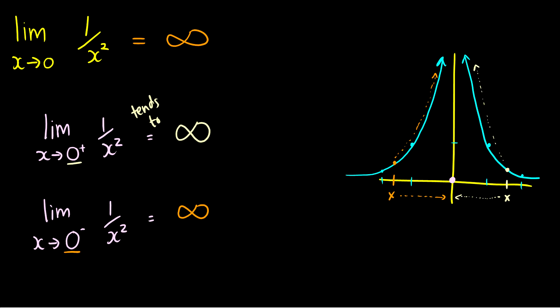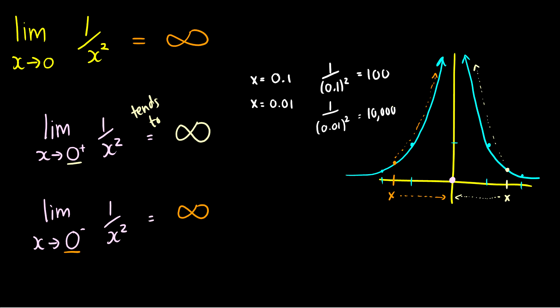We can also check this numerically. Approaching 0 from the right: if x = 0.1, then 1 over (0.1)² = 100. If x = 0.01, then 1 over (0.01)² = 10,000. These numbers get really big really quickly. Similarly from the left: if x = -0.1, then 1 over (-0.1)² = 100, and with x = -0.01, it's 10,000. Both sides show that the closer we get to 0, the higher the value becomes.